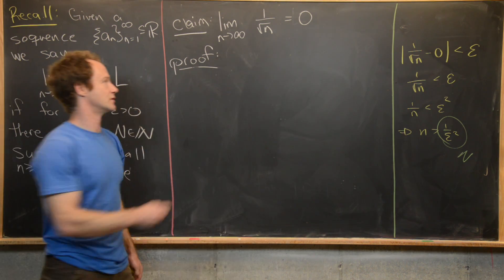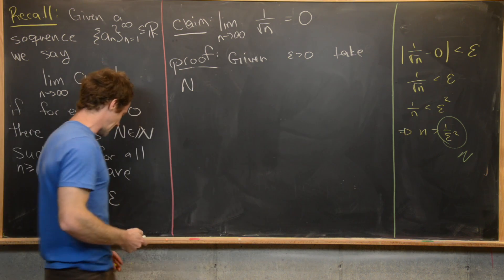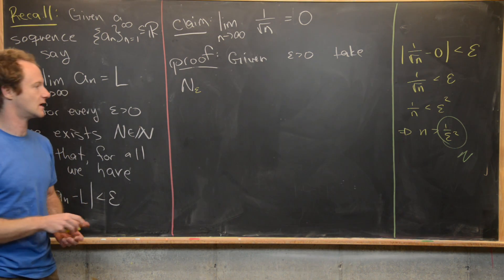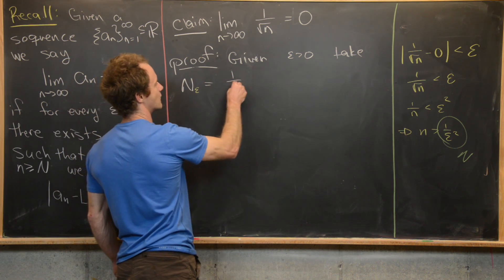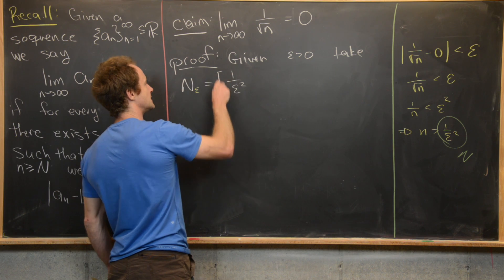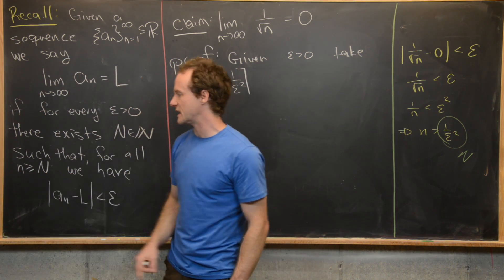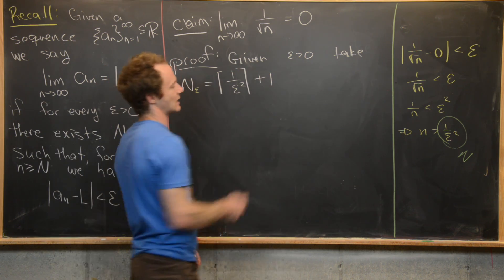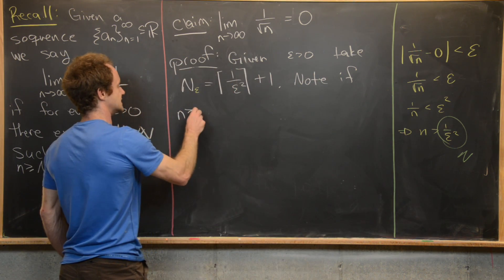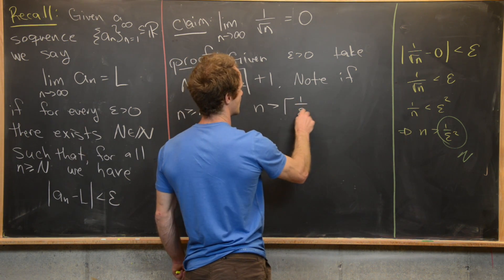Now we can launch into the proof. Given some arbitrary epsilon greater than zero, take capital N — sometimes written N_epsilon to emphasize its dependence on epsilon — to be the ceiling of 1 over epsilon squared. Note that 1 over epsilon squared is probably not a natural number, so we take the ceiling, and we add 1 to handle the non-strict inequality. Observe that if little n is bigger than or equal to capital N, then little n is strictly bigger than the ceiling of 1 over epsilon squared.